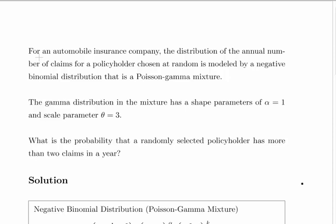For an automobile insurance company, the distribution of the annual number of claims for a policyholder chosen at random is modeled by a negative binomial distribution. This is a mixture of a Poisson and a gamma - a Poisson-gamma mixture.